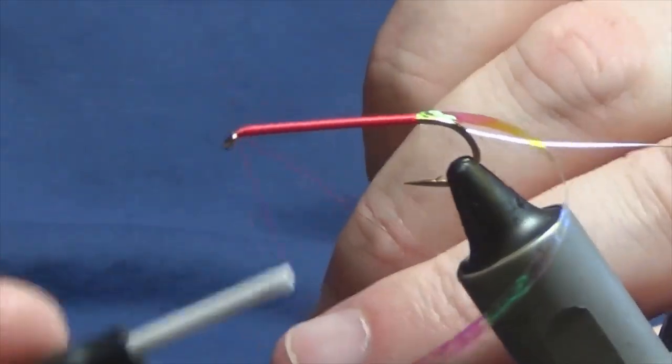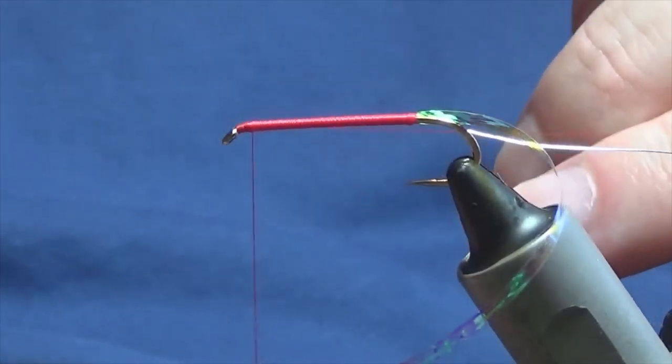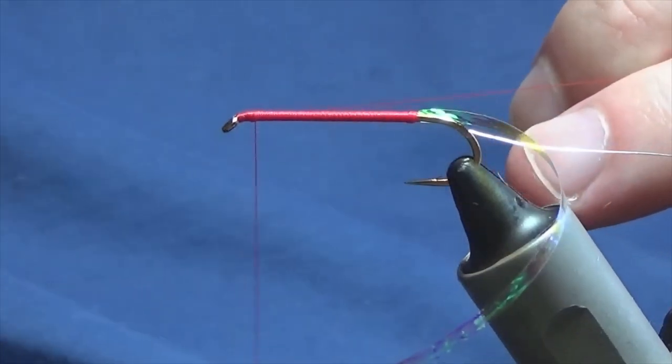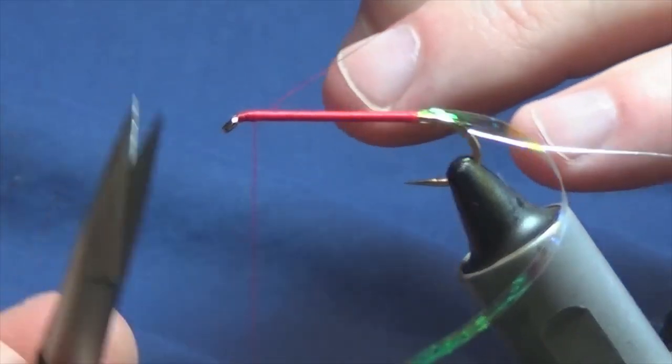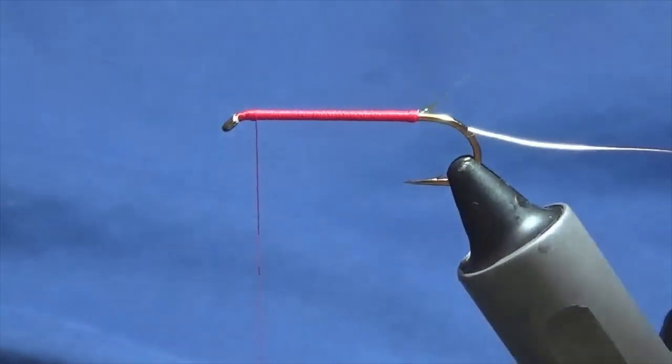So start off at the eye and work my thread up around about a head length. You want a decent head on the fly too, that's part of it. Trim away the excess, then we can bring up our Obamaras tinsel.